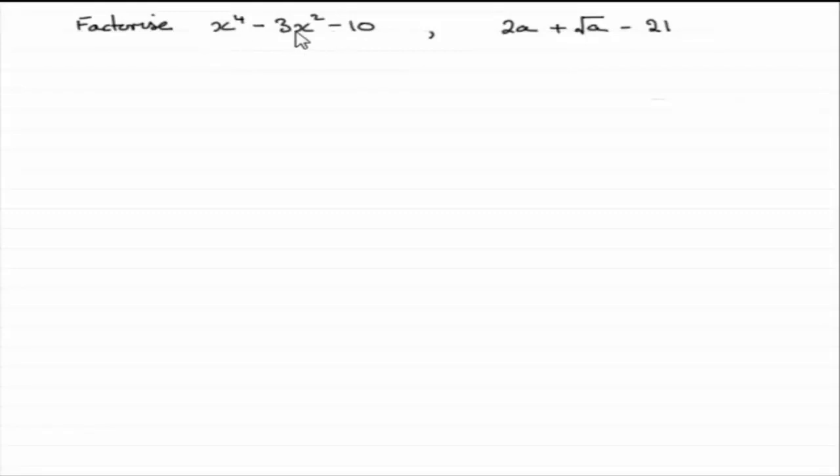So let me just show you what I mean by taking this first example. In this first example we've got x to the power of 4 minus 3x squared minus 10. Now what we can do is think of this x to the power of 4 as x squared all squared. x squared times x squared is x to the power of 4. Then we've got minus 3x squared and then the minus 10.